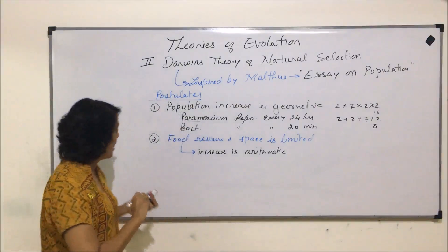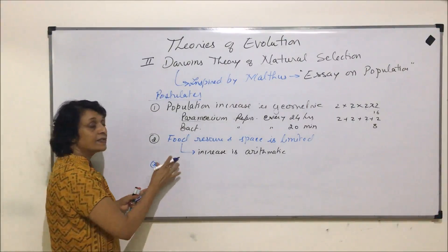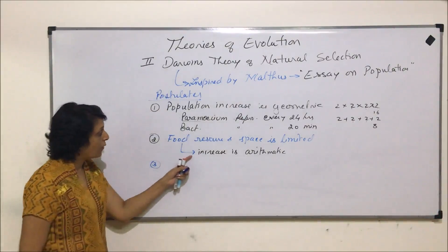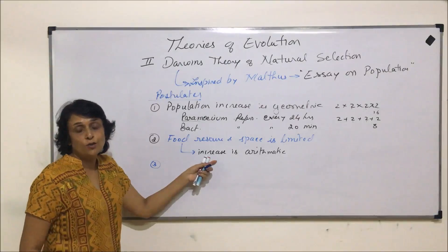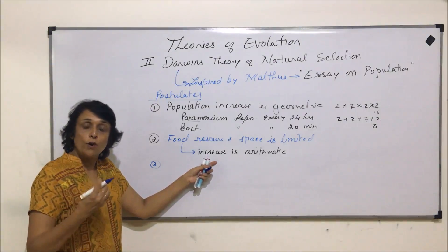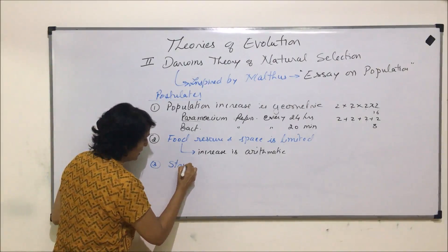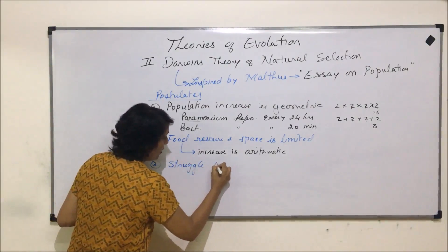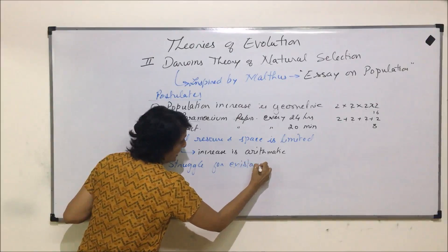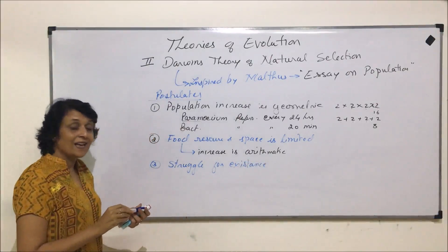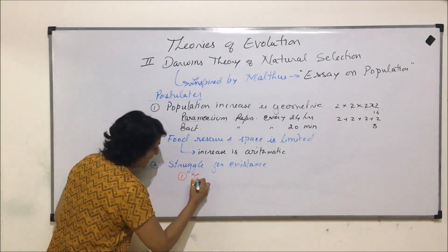The third postulate is that there is a struggle for existence. Since the number of organisms is large but food is limited, they are going to struggle for food and space. This struggle for existence can be classified into three categories: intraspecific, interspecific, and environmental.